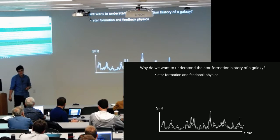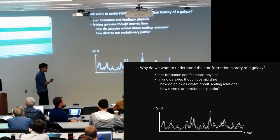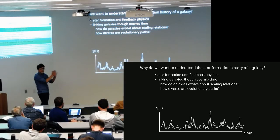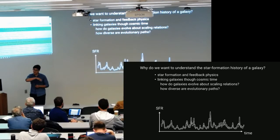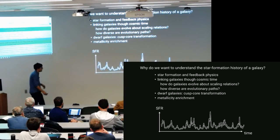From a galaxy evolution perspective, there are also other interesting questions we can take away from star formation histories. As we heard this morning from Sandy Faber, a major challenge in observations is still to understand how we can link galaxies through cosmic time, because each galaxy is observed just once during its whole lifetime. We observe scaling relations between star formation rate and stellar mass at different epochs, but we don't really understand how individual galaxies evolve along these relations with cosmic time. Related questions also concern dwarf galaxies, core-to-cusp transformation, metallicity enrichment, and so on.